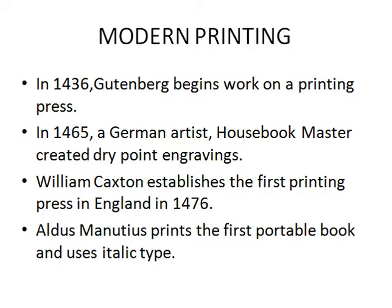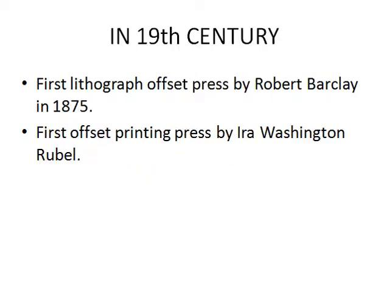It took almost four years for Gutenberg to finish his work on the printing press. It was in 1875 that the first lithograph offset press was invented by Robert Barclay. There were also offset printing presses developed by Ira Washington Rubel. These are the main inventions related to printing, made in the 19th century. As with most inventions, many breakthroughs in printing were made accidentally, though people who were eager to make books available for common people worked hard behind finding out these printing presses.